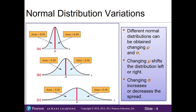Normal distributions can have different shapes depending on the mean and the standard deviation. By changing the mean we shift our distribution to the left or the right, and by changing our standard deviation this increases or decreases the spread or the width of our curve.